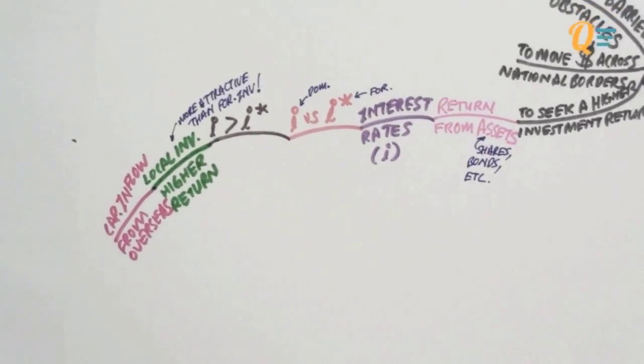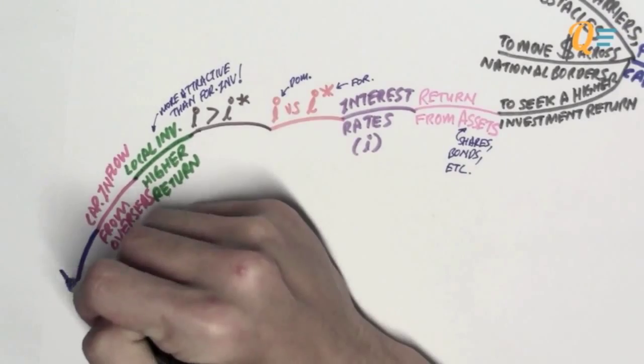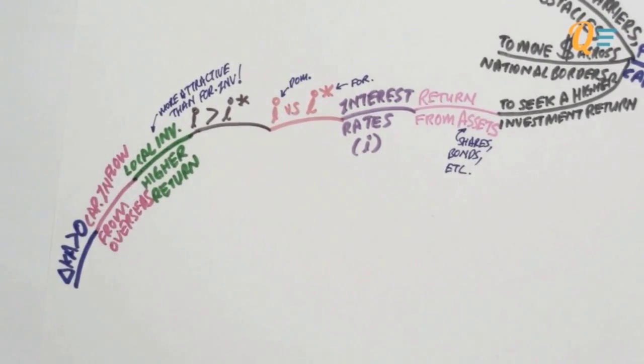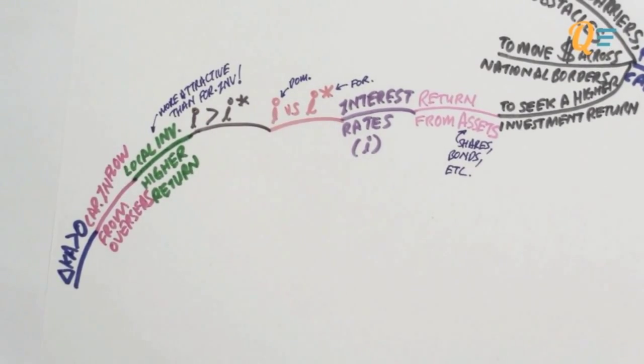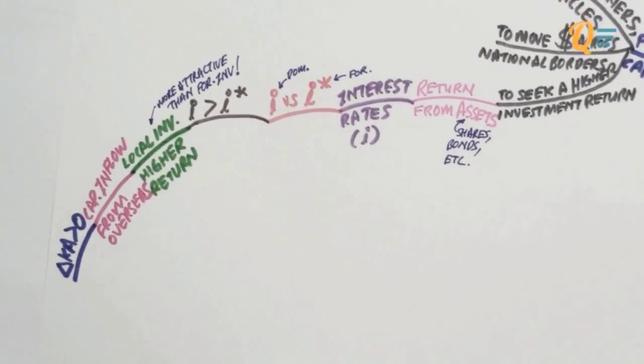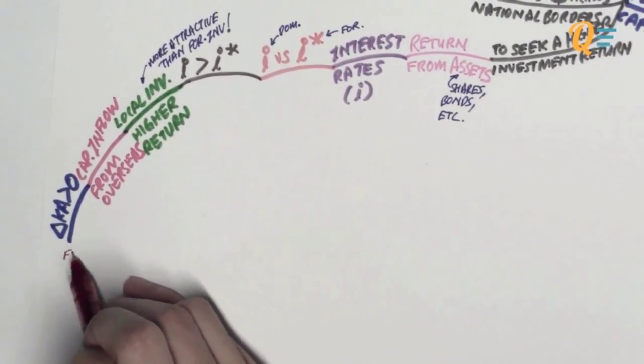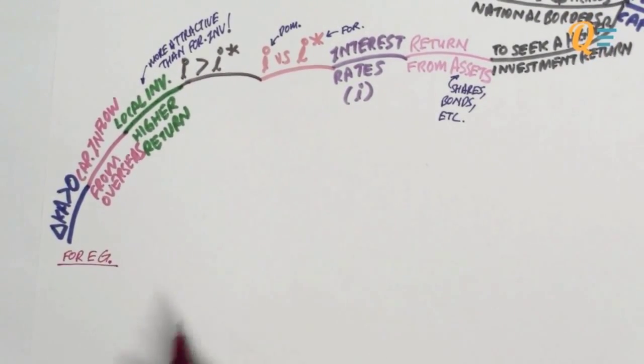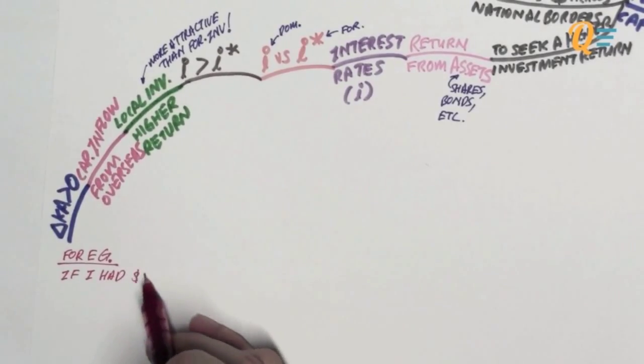So there's going to be capital inflow from overseas because foreign investors would also want to invest in domestic assets. And therefore, you're going to have an increase in the capital account. Therefore, the change in the capital account is going to be more than zero. That's going to be a massive inflow of investment capital.